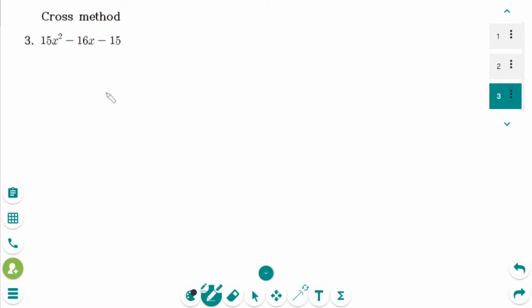This is the last question. First, I will show you the cross method. 5x times 3x makes 15x squared. And 3 times 5 makes 15.